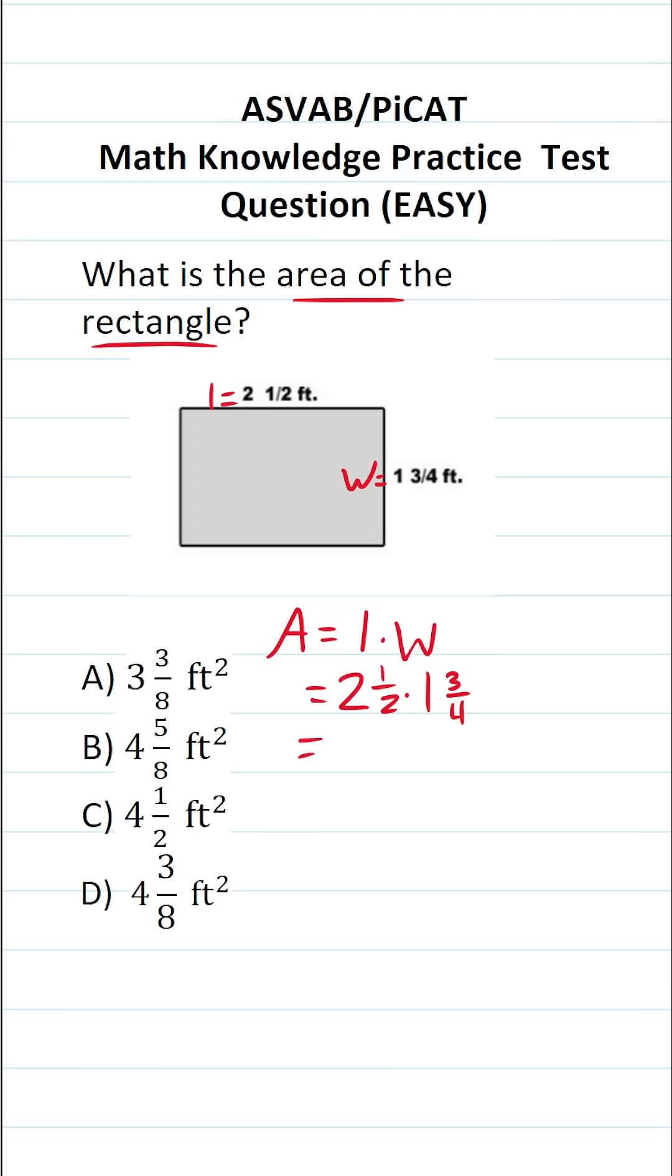To multiply mixed numbers, the easiest way is to convert these to improper fractions. Let's convert 2 1/2 to an improper fraction. The denominator is 2. To find the numerator, we do 2 times 2, which is 4, plus 1, which is 5. So 5/2 is the same thing as 2 1/2.